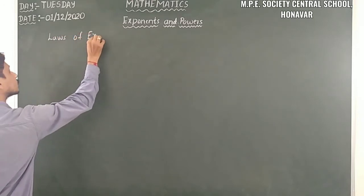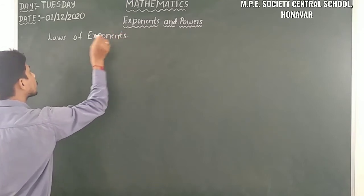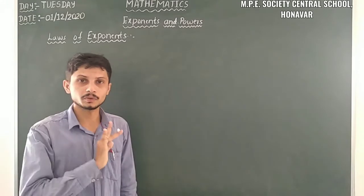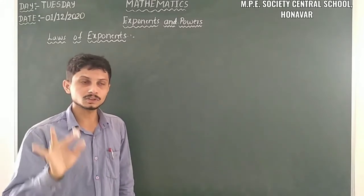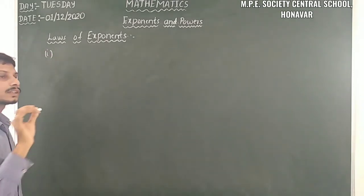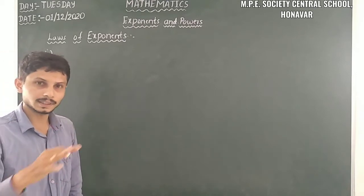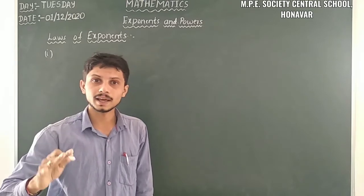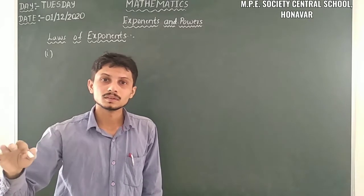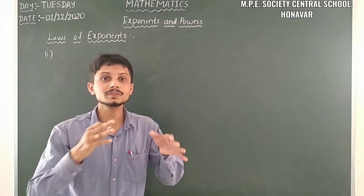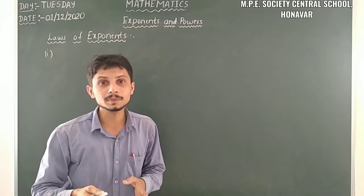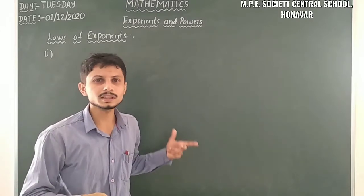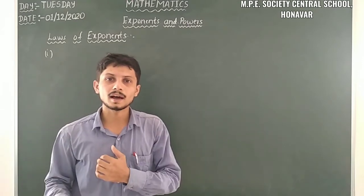Laws of exponents. So there are some laws of exponents we have to use in this chapter. Let us take the first one. Here I will take any number as the base. So any exponents — we have two terminologies: one is the base, and the other is the exponent. Here I will take the base as a, b, c, d, and the exponent as m and n. When we have different bases we use a and b; when we have different exponents we use m and n.